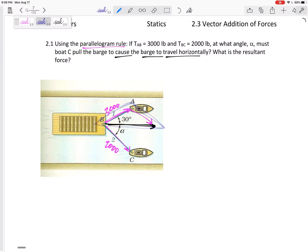See this triangle right here? Alright, it has one side that's 3,000, another side that's 2,000. This one is at 30 degrees, and I don't know the angle alpha.